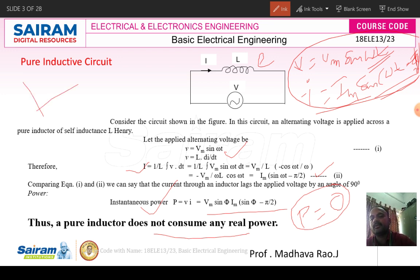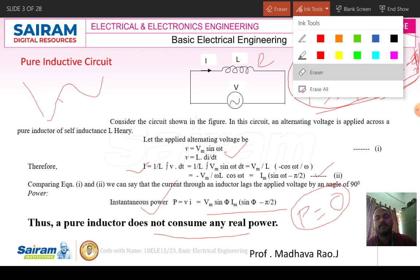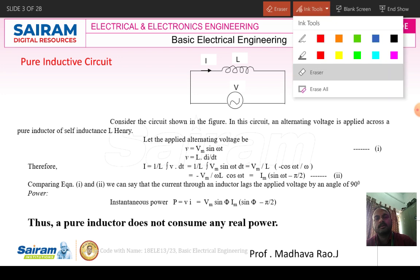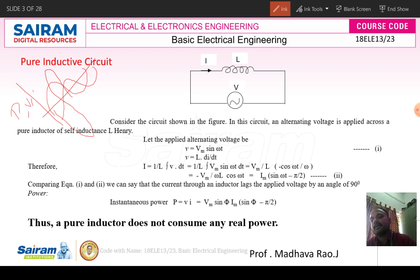Now we have to draw the voltage and current waveforms. Voltage is like this. The current lags the voltage, so the current waveform looks like this. In one period the power will be positive and in another period the power will be negative. We draw this again: take the voltage waveform, the current waveform lags the voltage. In this period power will be negative, in this period power will be positive. We draw waveforms for power, voltage, and current over period T. This is about the waveforms of a pure inductive circuit.